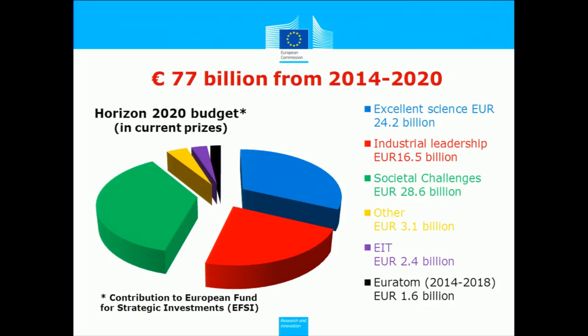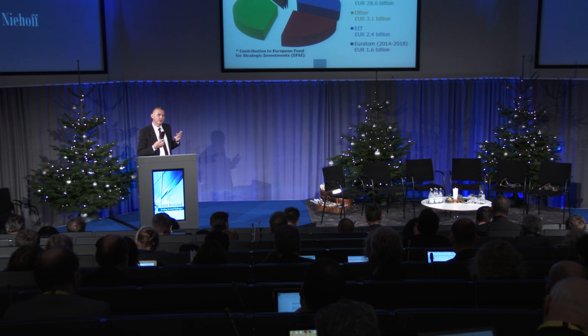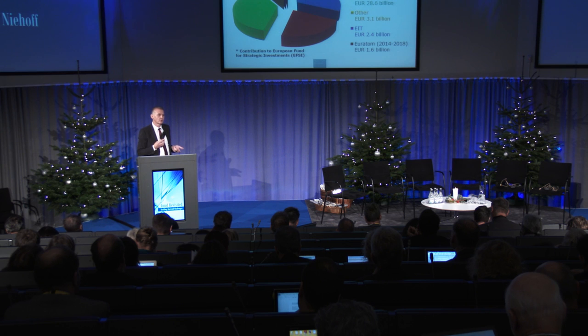More than 35% of the budget goes directly to societal challenges — energy, environment, health, etc. The other pillars are equally important in addressing these challenges. The key enabling technologies are a challenge as such, but they also provide solutions to many societal challenges. For the energy challenge, for example, materials for energy applications are in the key enabling technologies. The excellent science pillar with the ERC and Marie Skłodowska-Curie prepares the grounds to have the researchers of the future and the infrastructures and science in place that we need to address these challenges.